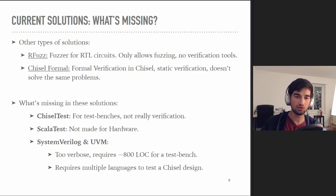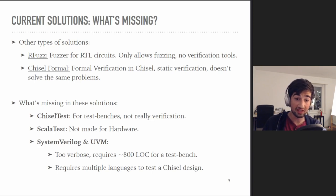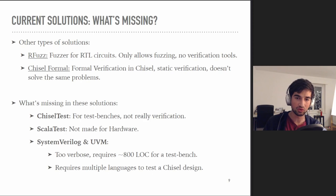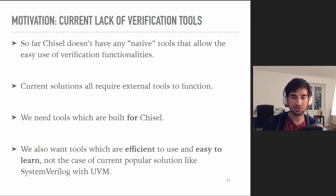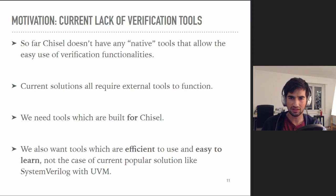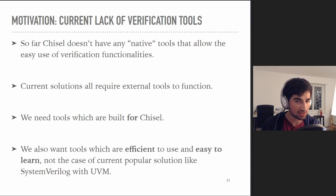The current solutions do work, but they can definitely be improved upon. ChiselTest doesn't really have any verification functionalities — i.e., ways to guarantee the correctness of a test — and is also lacking in automated testing capabilities. SystemVerilog with UVM does propose these missing functionalities, but has the problem of being extremely verbose and requires relying on multiple languages to test our design. So far, Chisel doesn't have any native tools that allow the easy use of verification functionalities. Our goal is to provide Chisel with tools that are specifically tailored to the language, efficient to use, and easy to learn.